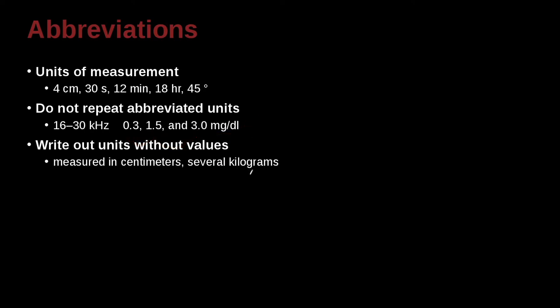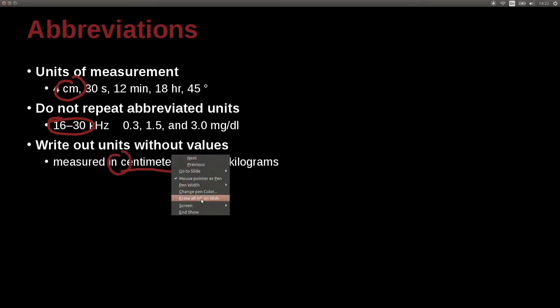Write out units that do not have values. So for example, if you're going to write centimeters, or kilograms, or kilometers, or seconds, or kilohertz, if there's no number, then you must write out the whole word. Now here we have a number, so we write cm. Here we have no number, so we write centimeters.